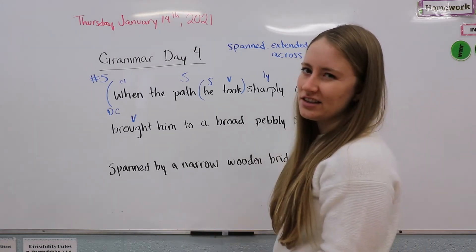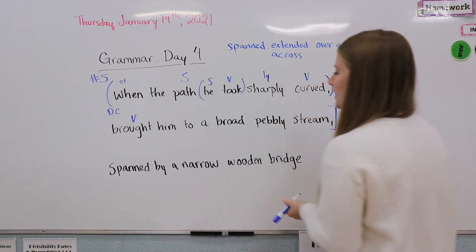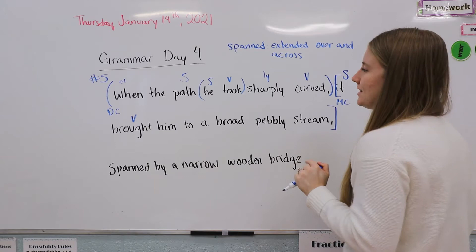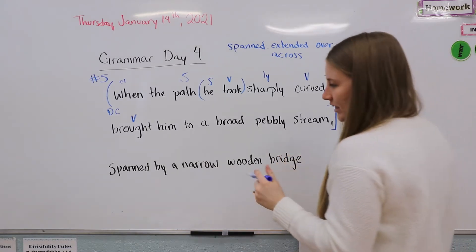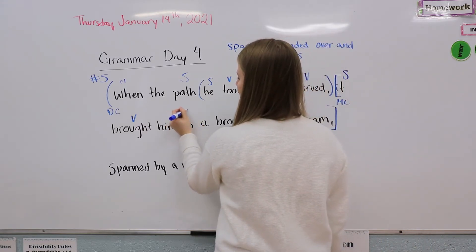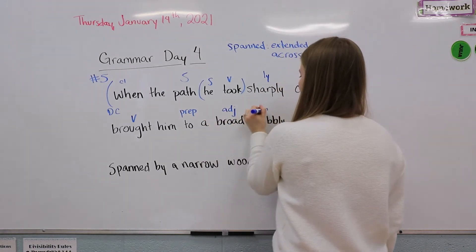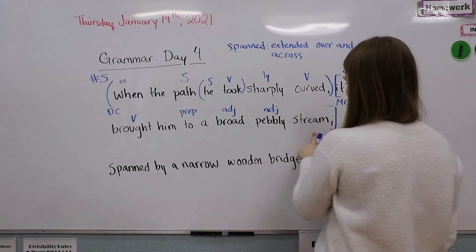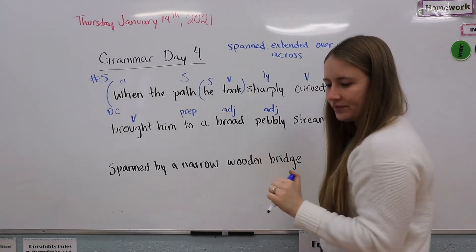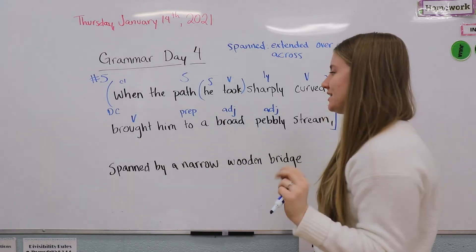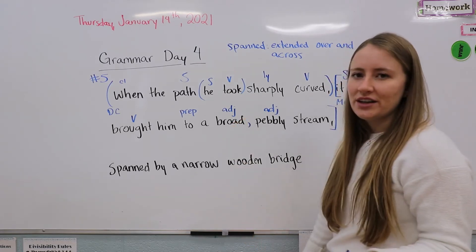This is just the hangoff at the end, so it's not a clause all by itself — it's just extra information. Looking at the main clause, we have a preposition 'to,' and then we have two adjectives: broad and pebbly stream. Because these adjectives can be switched around — we can say 'pebbly, broad stream' — they are coordinate adjectives, which means we're going to give them a comma.